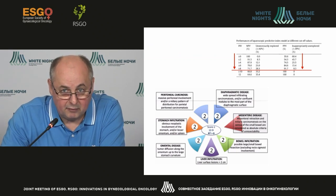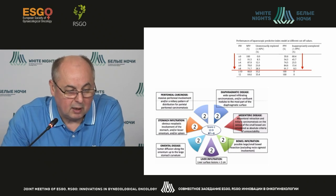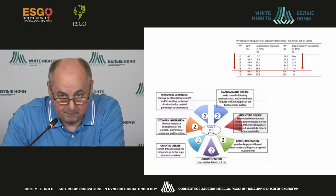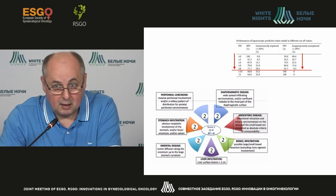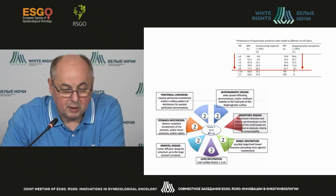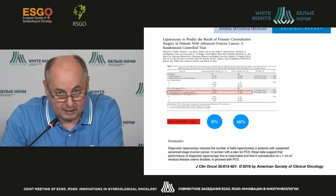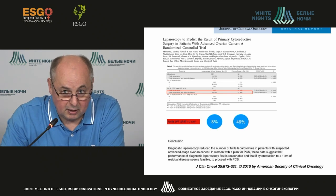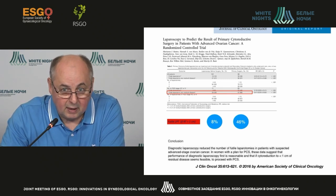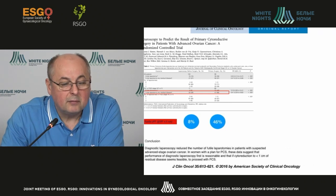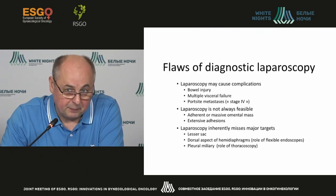There is a modified system of assessment for the peritoneal carcinomatosis, the Fagotti index, in the basis of which you can find the assessment of eight localizations of peritoneal carcinomatosis and a systematized assessment of the manifestations. Carcinomatosis with less than 10 points according to this scale makes it possible to plan the primary debulking. This approach makes it possible to provide for 30% of patients a reduction of the so-called explorative interventions.